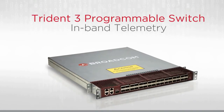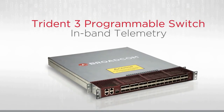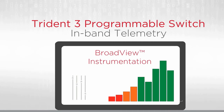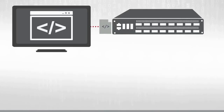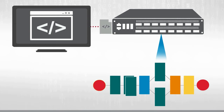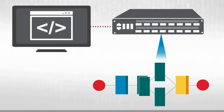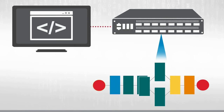In this video, we'll show in-band telemetry mechanisms supported by the next-generation Trident III silicon family using the Broadview Instrumentation Suite. Network switch programmability enables in-field upgradability of the pipeline to support new packet processing capabilities. Trident III delivers flex parsing, flex table lookup, and flex metadata insertion in the pipeline, all through programmability.